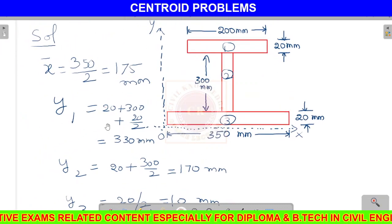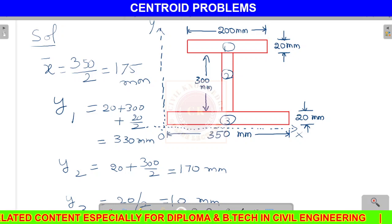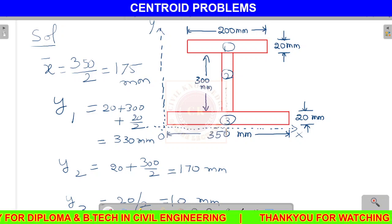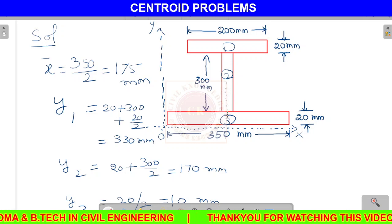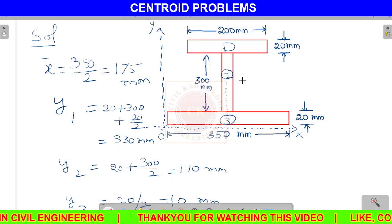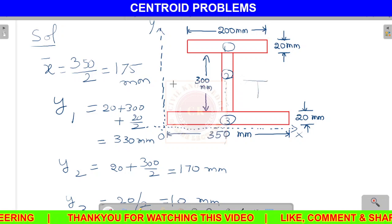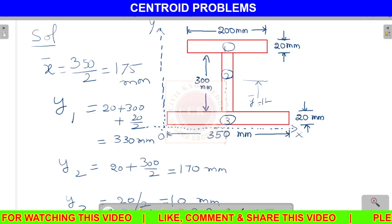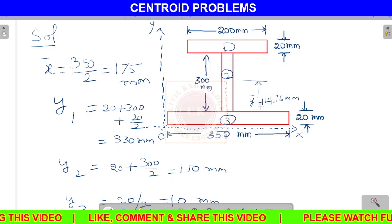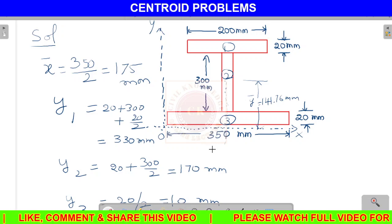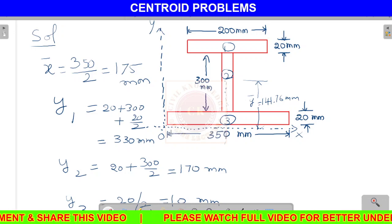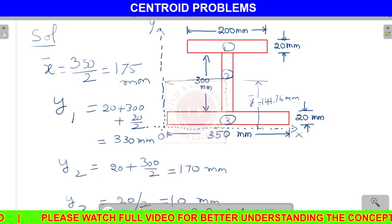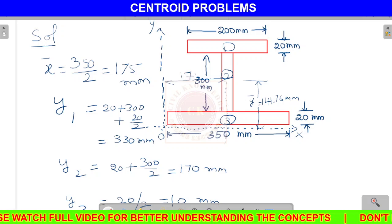So first of all, x-bar is 175 mm. And y-bar is 141.76 mm from the bottom. So the centroid is located at x-bar = 175 mm and y-bar = 141.76 mm from the bottom.